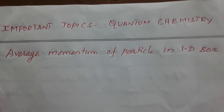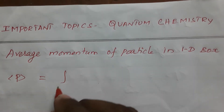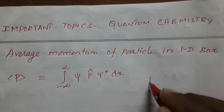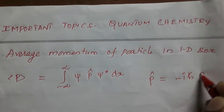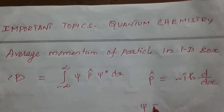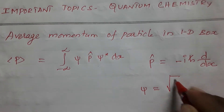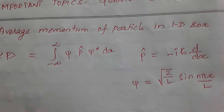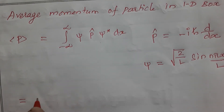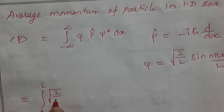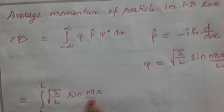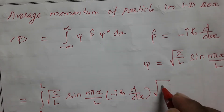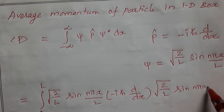Now for finding the average momentum, that is P, that is equal to the integral from minus infinity to plus infinity of psi, p-cap, psi-star dx. For the momentum operator, p-cap is equal to minus i h-cross d by dx. The wave function psi is equal to square root of 2 by L, sin(n pi x by L).